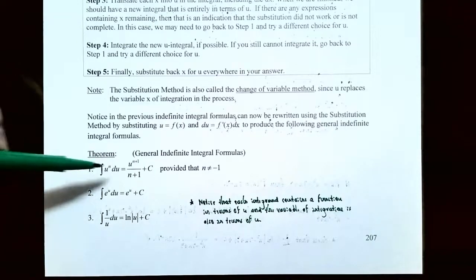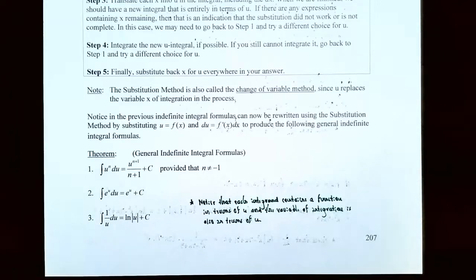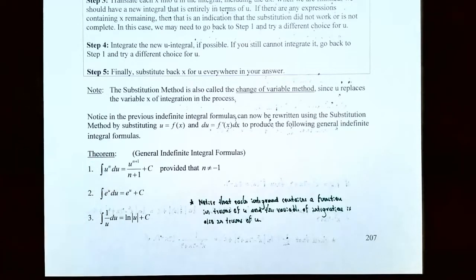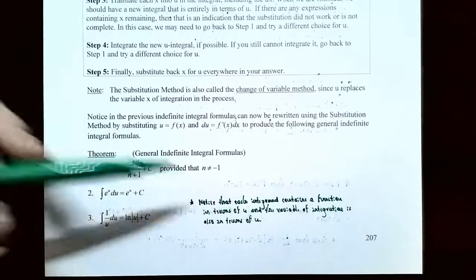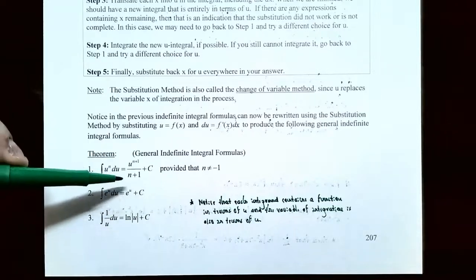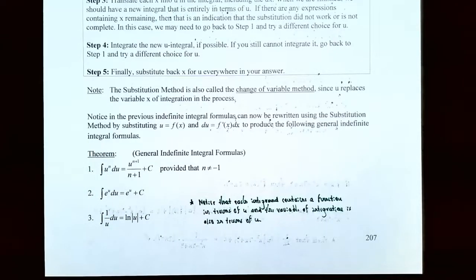Now this formula looks more familiar: instead of f of x to the n, it's u to the n and the variable of integration is u. Using the power rule, you add one to the exponent to get u to the n plus one, divide by the new exponent n plus one, and don't forget the plus c for the family of antiderivatives. Again, the formula does not work if n is negative one because negative one plus one in the denominator would be zero — undefined.